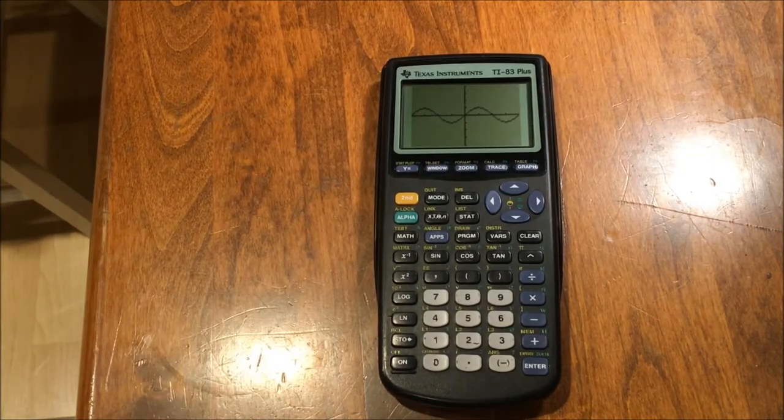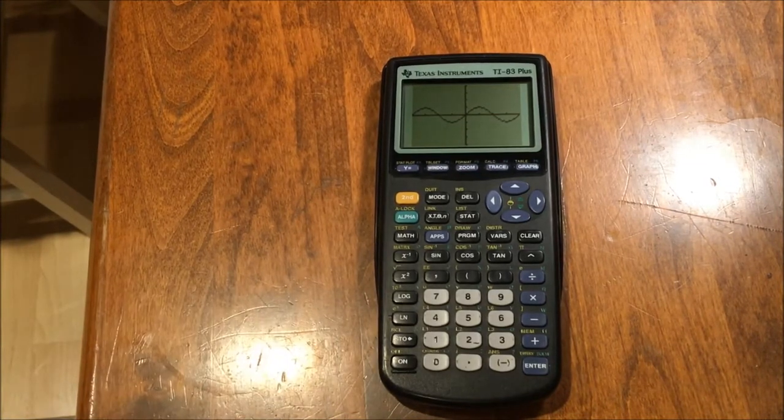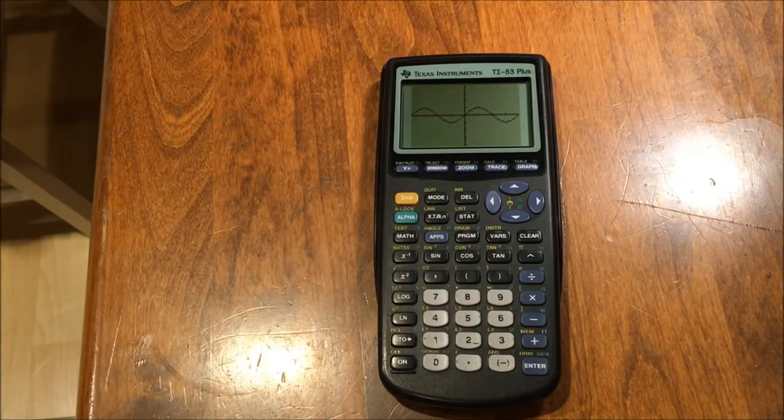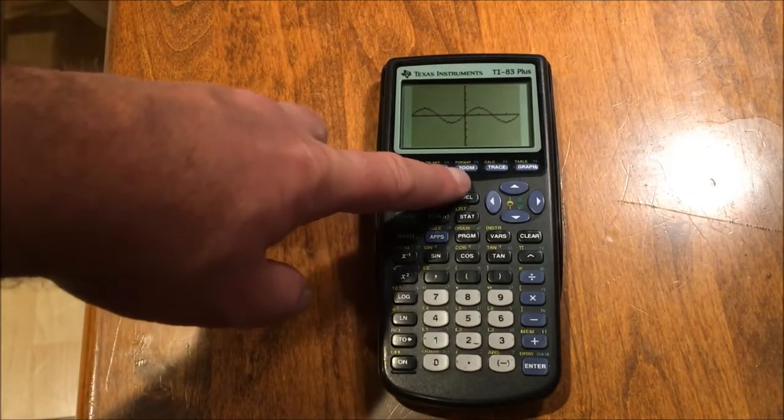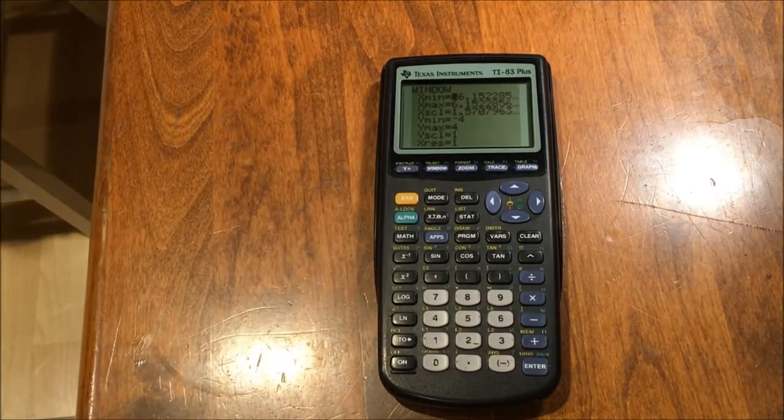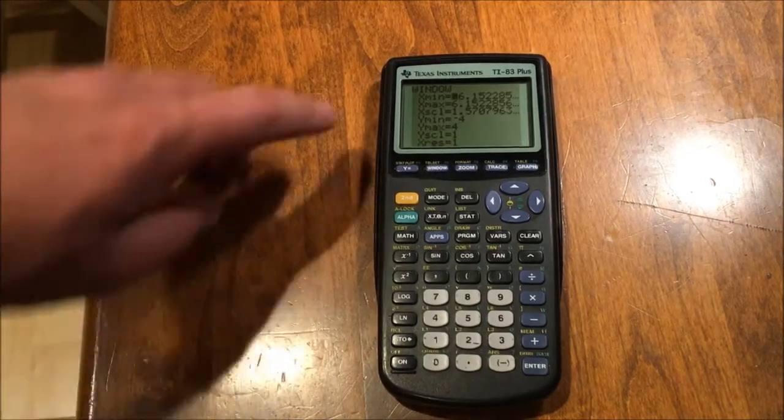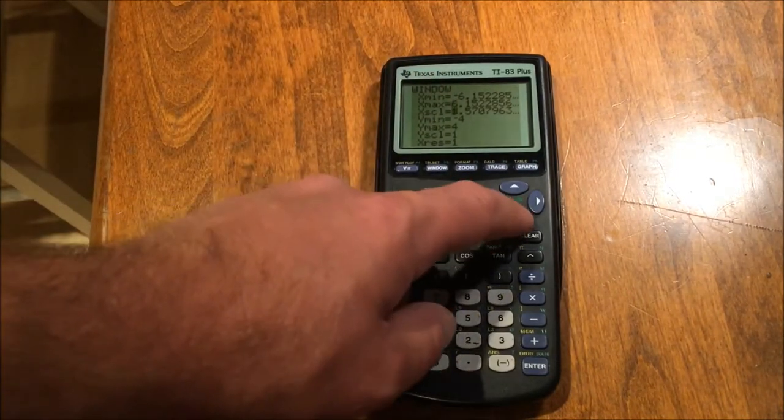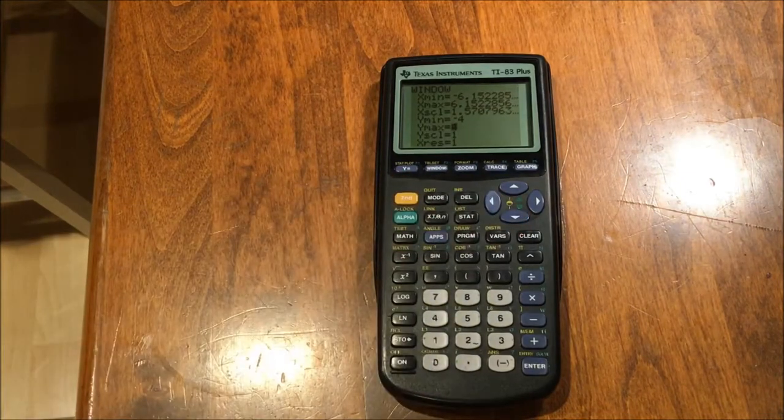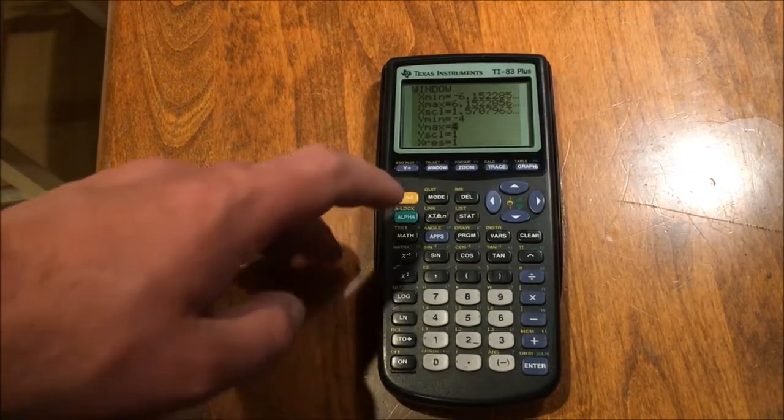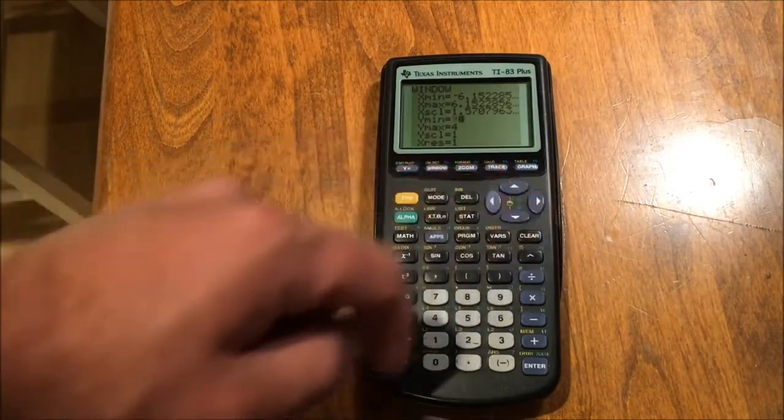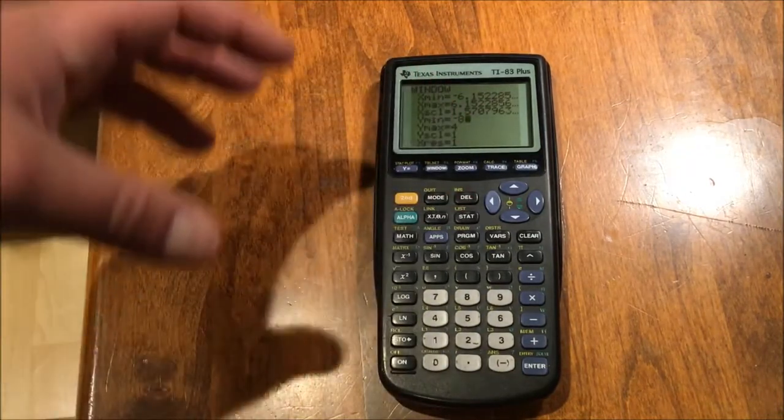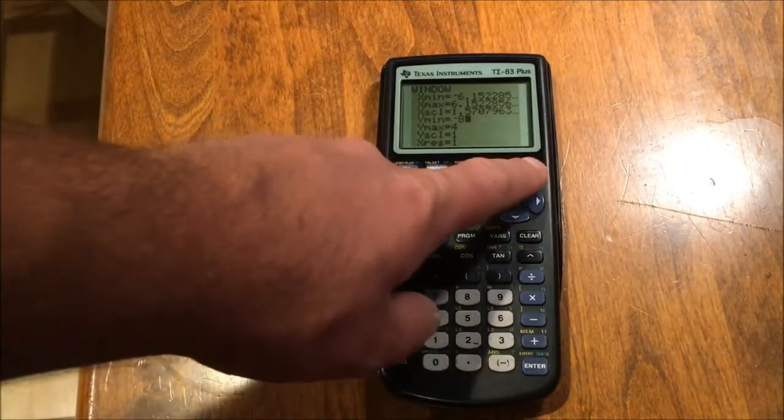Let's say that you wanted not to change your window entirely, but just change one aspect of the window. Maybe I wanted to see more negative values on the y-axis. I can press, instead of zoom, I press window. Now, the window is set up for the zoom trig feature. So, if you notice, it almost goes to negative two pi and positive two pi. And on the y-axis, we go from negative four to positive four by default. Watch what happens when I change y min to negative eight instead of negative four. What I will do to get out of this window, but not back to the main screen, rather back to the graph, is I just press graph.